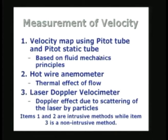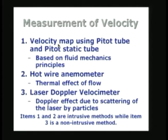What are the different ways of measuring fluid velocity? The first is to use a pitot tube or a pitot-static tube. Either can determine the velocity at a point and therefore map the velocity variation within a flow domain. The operating principle involves fluid mechanics principles — we will digress a little and learn about this principle before using the pitot tube or pitot-static tube for velocity measurement.